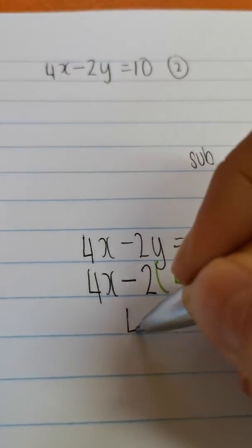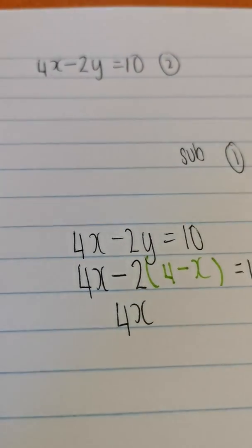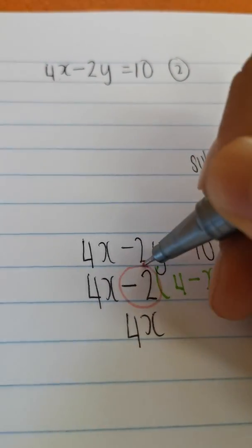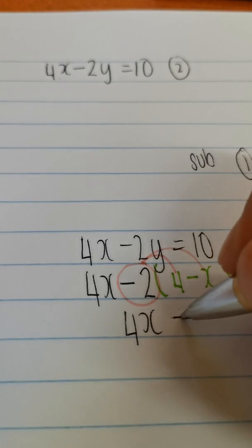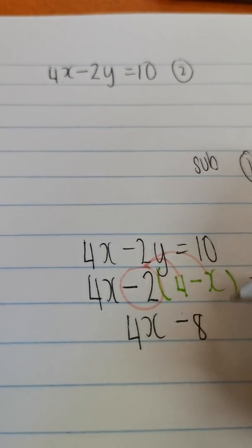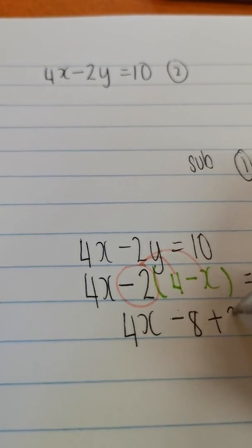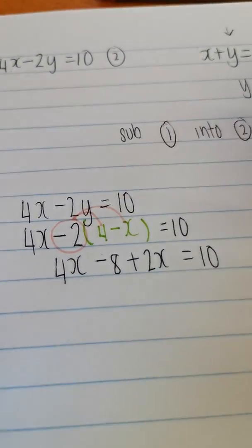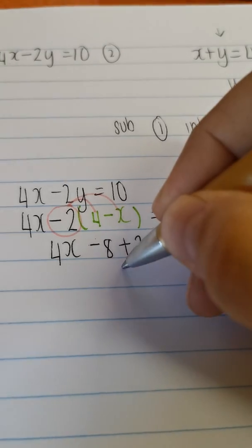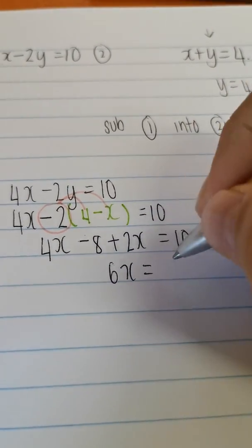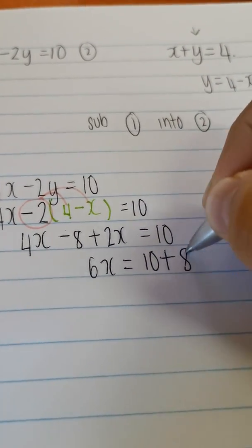And then this here is going to give me 4x. Now I'm going to distribute this negative 2 into here and into here. So this here is going to give me minus 8. Negative 2 times negative x gives me positive 2x equals 10. I'm going to keep all my variables x on this side, all my numbers on this side. So I have 6x equals plus 8.